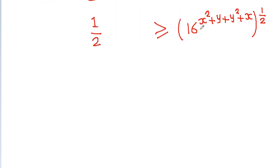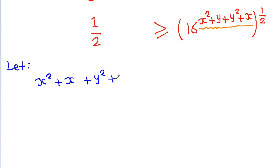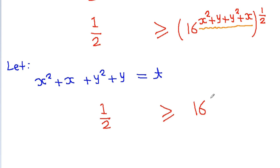Now, since 16^(x²+y) + 16^(y²+x) is given as 1, we get 1/2 ≥ 16^[(x²+y + y²+x)/2]. If we let t = x² + x + y² + y, then we get 1/2 ≥ 16^(t/2). Let's call this equation 1.